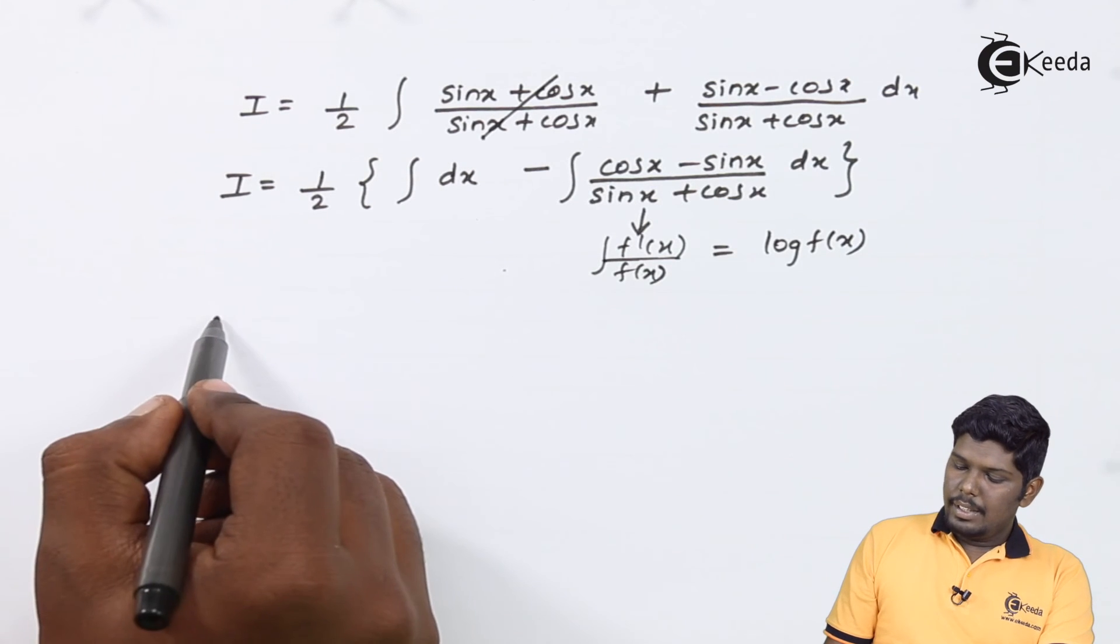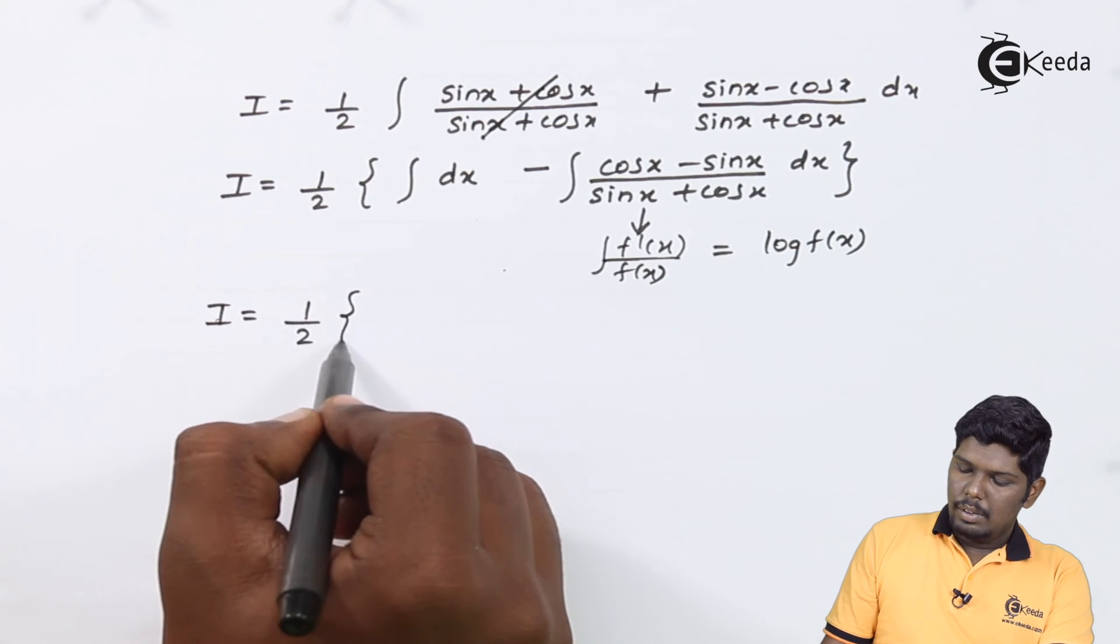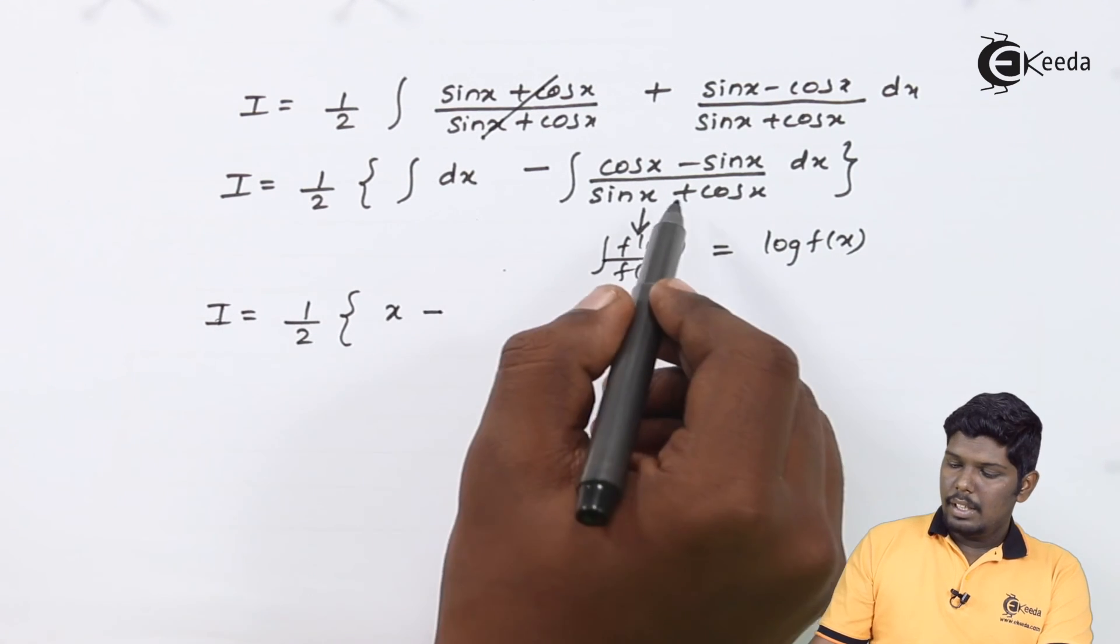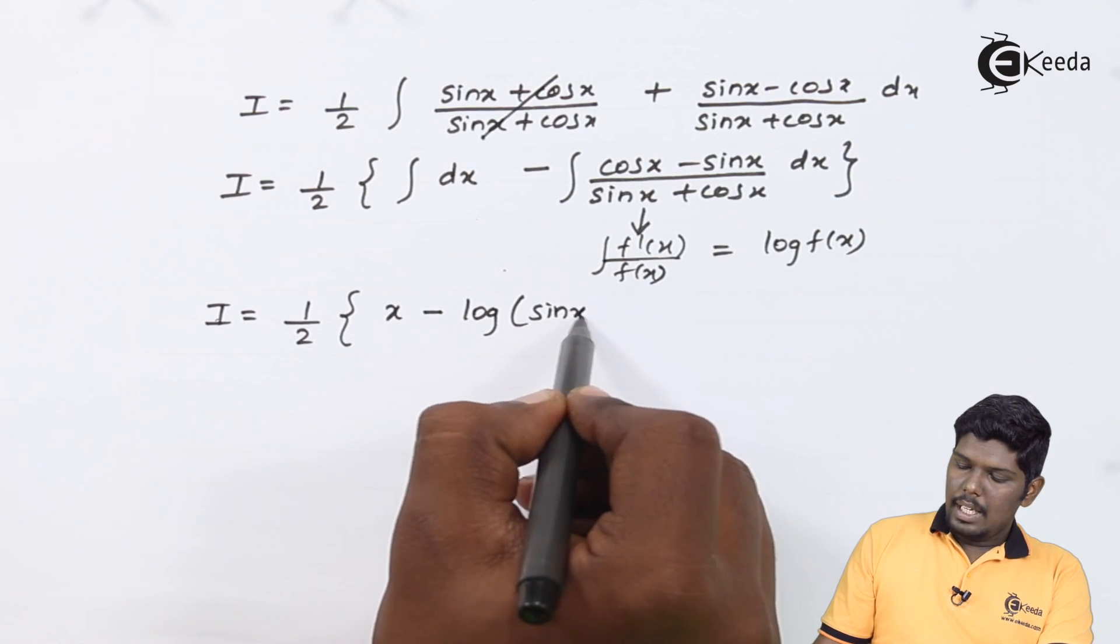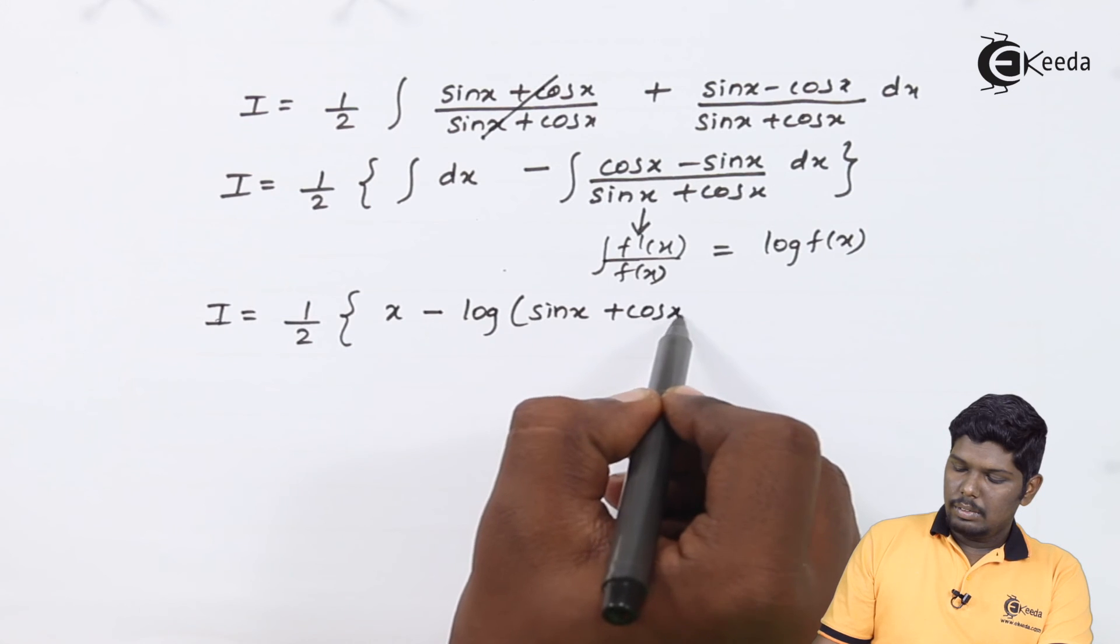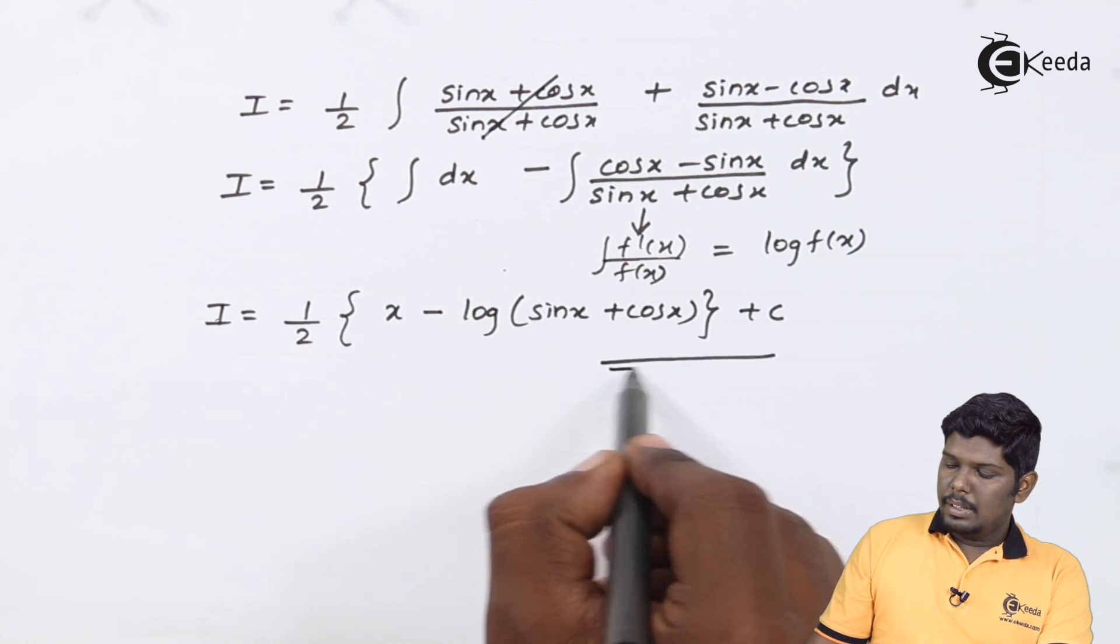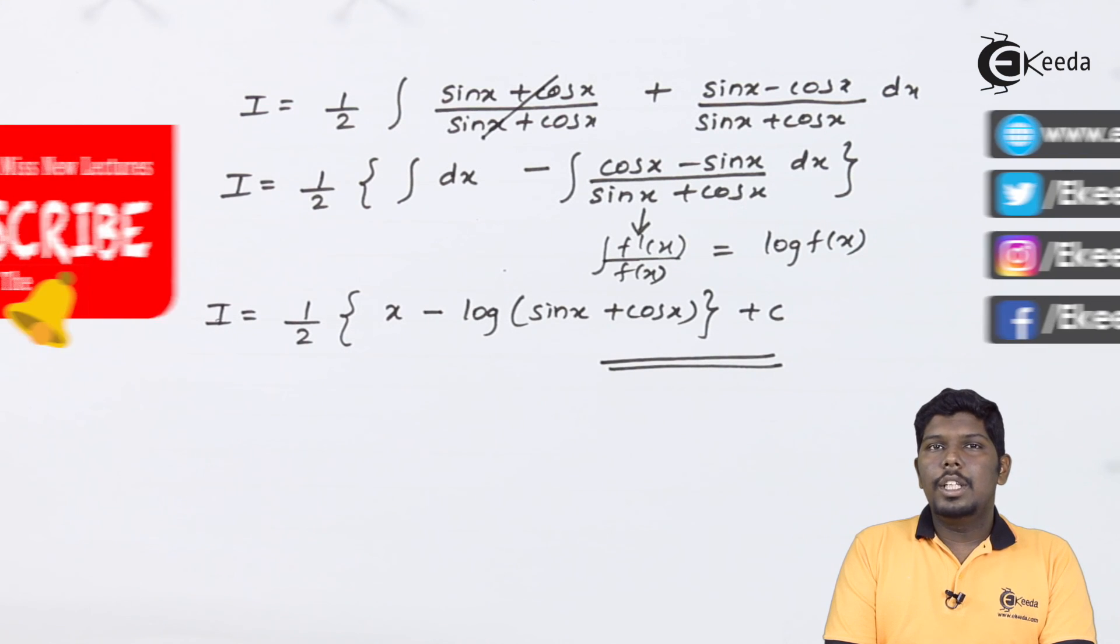Therefore, the final answer will be I is equal to half, integral of dx is x minus here it will be log of sin x plus cos x plus c. This becomes the integration of the given function. I hope friends you have understood this problem.